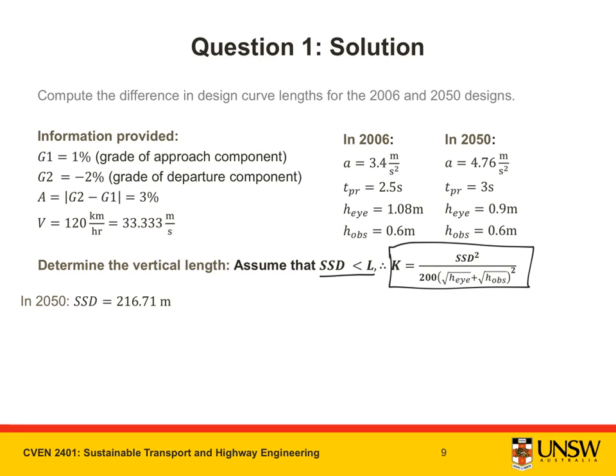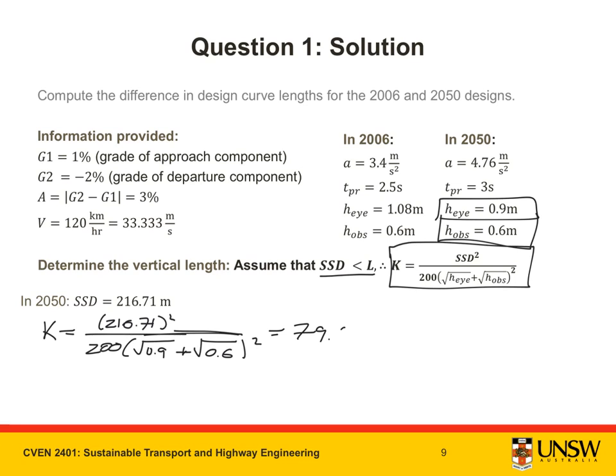Substituting in my values, I have K is equal to SSD. SSD in 2050 is 216.71 squared over 200 H_I, which in 2050 is 0.9 m, plus H_obs, which in 2050 is 0.6 m, all squared. Entering this into my calculator, I find that K is equal to 79.085 in 2050.